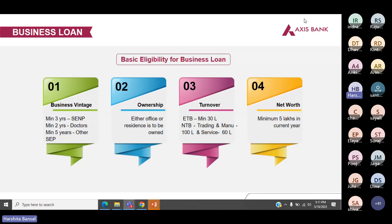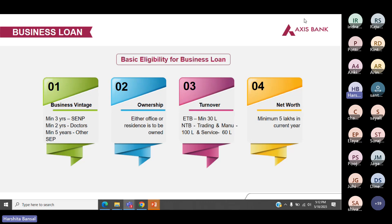Either the office or the residence needs to be owned by the borrower. Third is turnover — if the borrower is an existing customer of the bank, we ask for 30 lakhs of turnover. If the borrower is a new to bank customer (NTB) belonging to trading and manufacturing, we ask for 1 crore of turnover. If they belong to service industry, we ask for 60 lakhs. The borrower needs a minimum 5 lakhs of net worth in the current year.